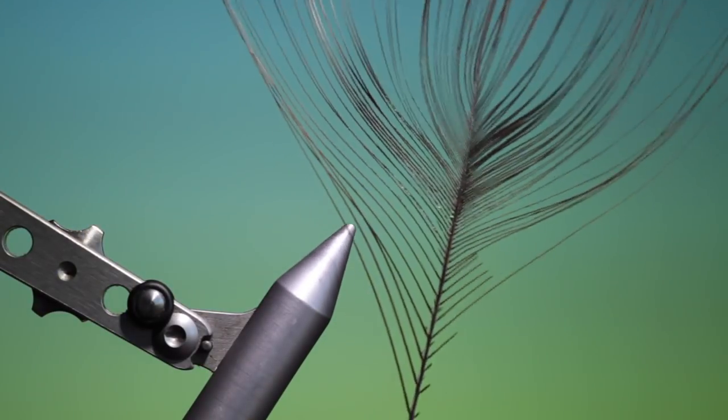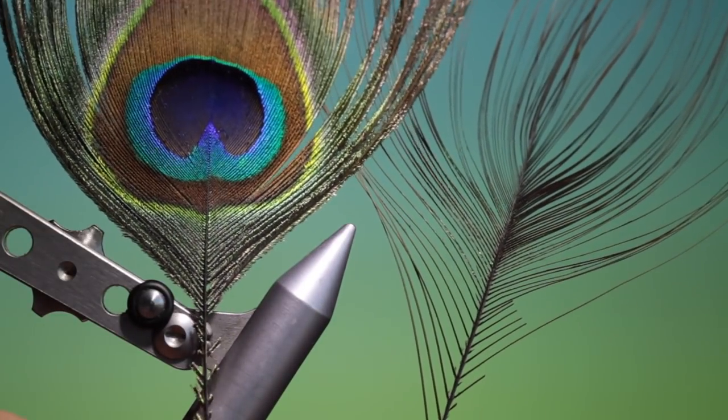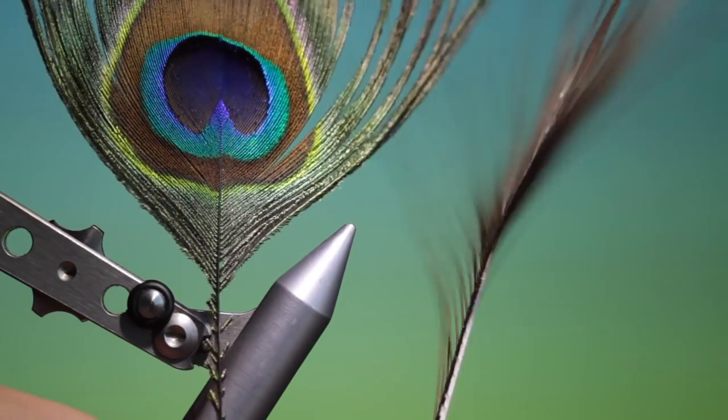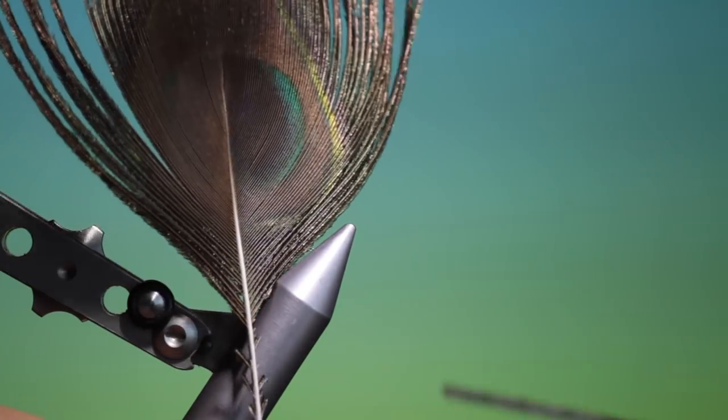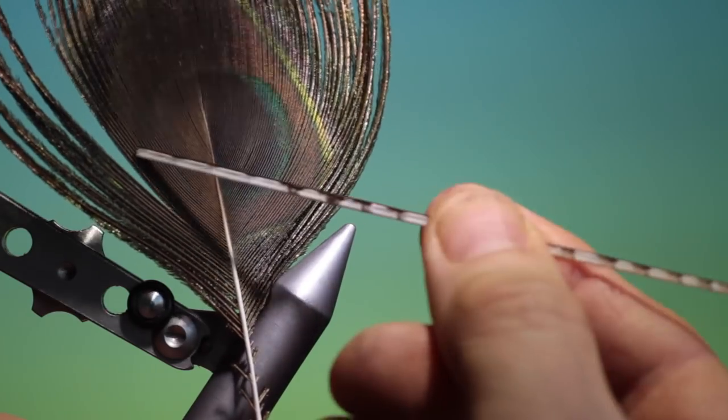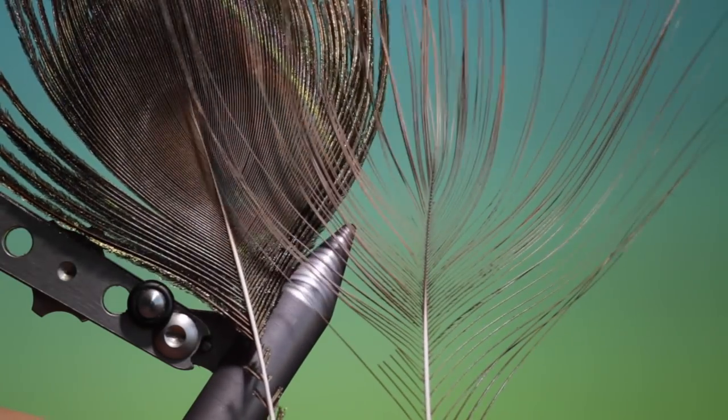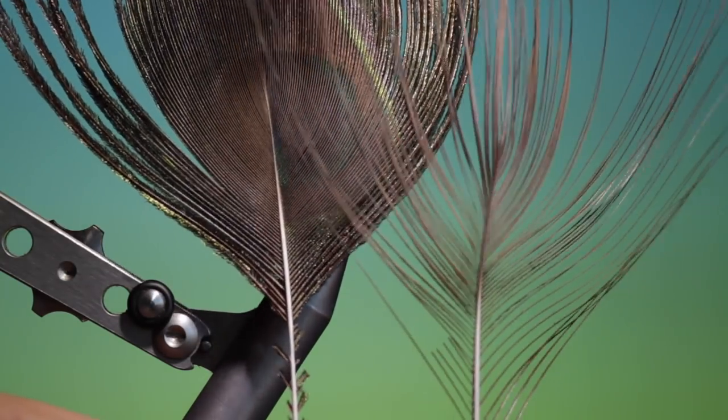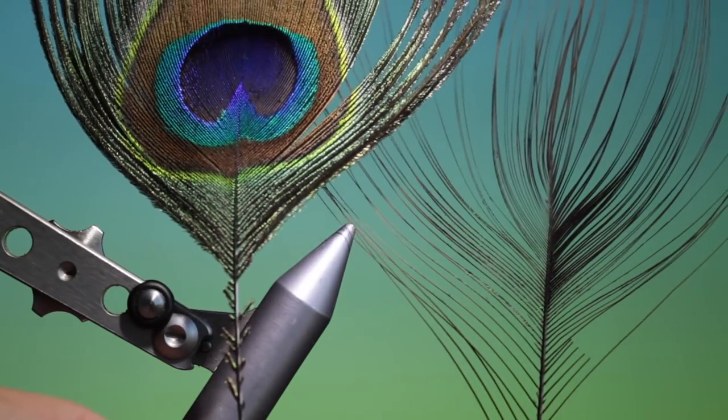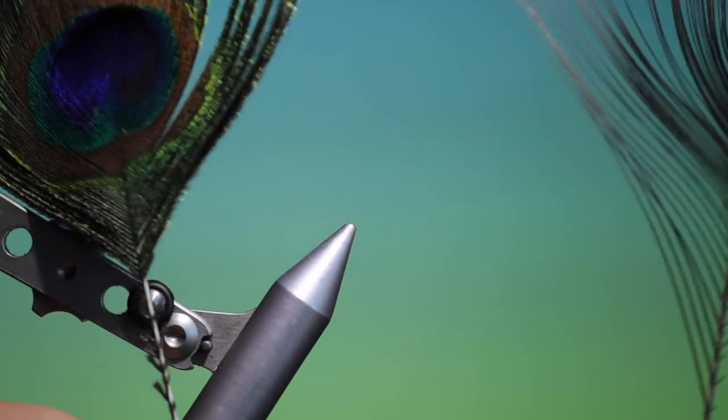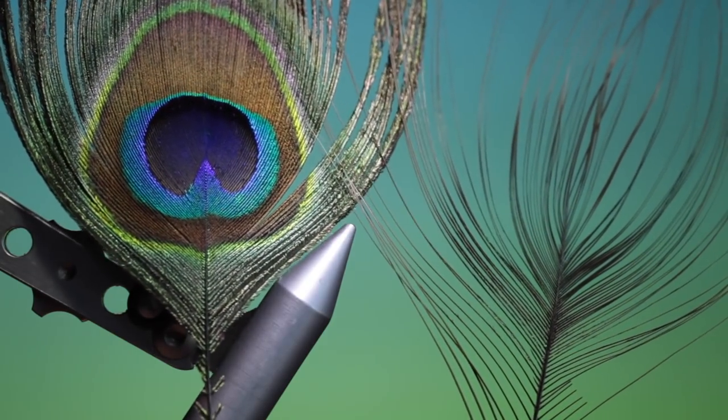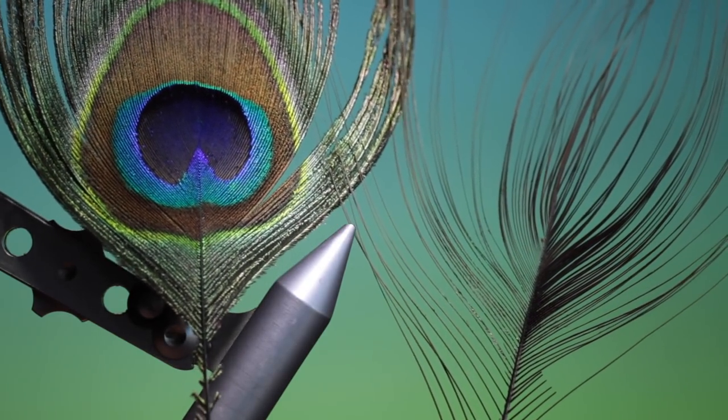There it is, the finished stripped quill. You can see the difference with the full eye top. If you look on the back, you can see the useful area here. It only takes a couple of minutes and you get a whole load of material. So give it a go. Thanks for watching.